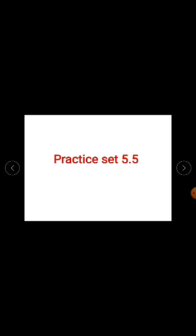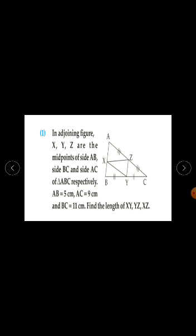Now we will solve questions from practice step 5.5. Question number 1: In the adjoining figure, X, Y, Z are the midpoints of sides AB, BC, and AC of triangle ABC respectively. AB is equal to 5 cm, AC is equal to 9 cm, and BC is given as 11 cm. Find the lengths of XY, YZ, and XZ.